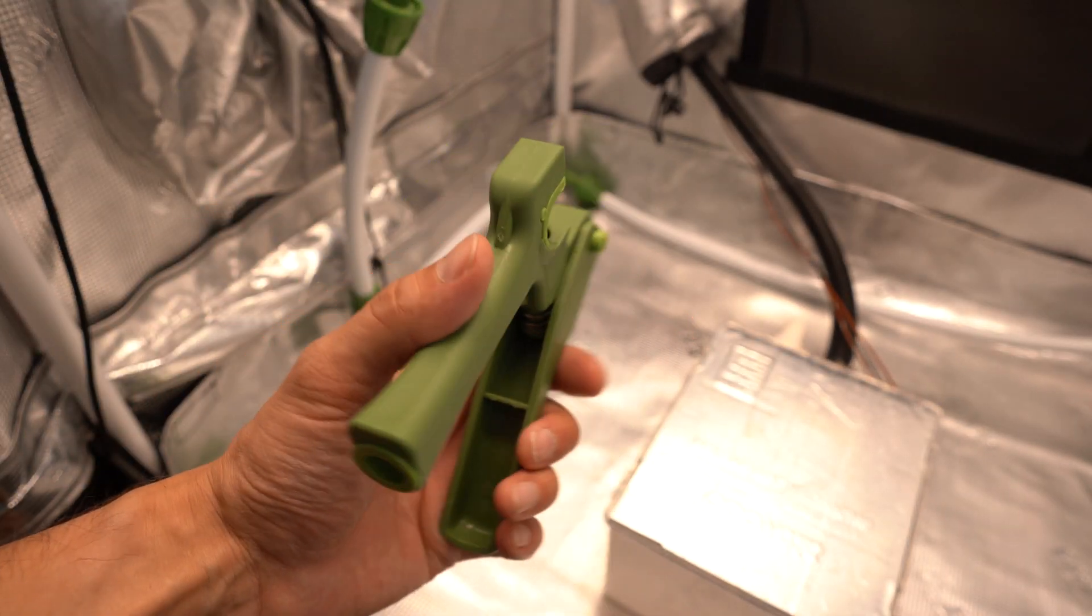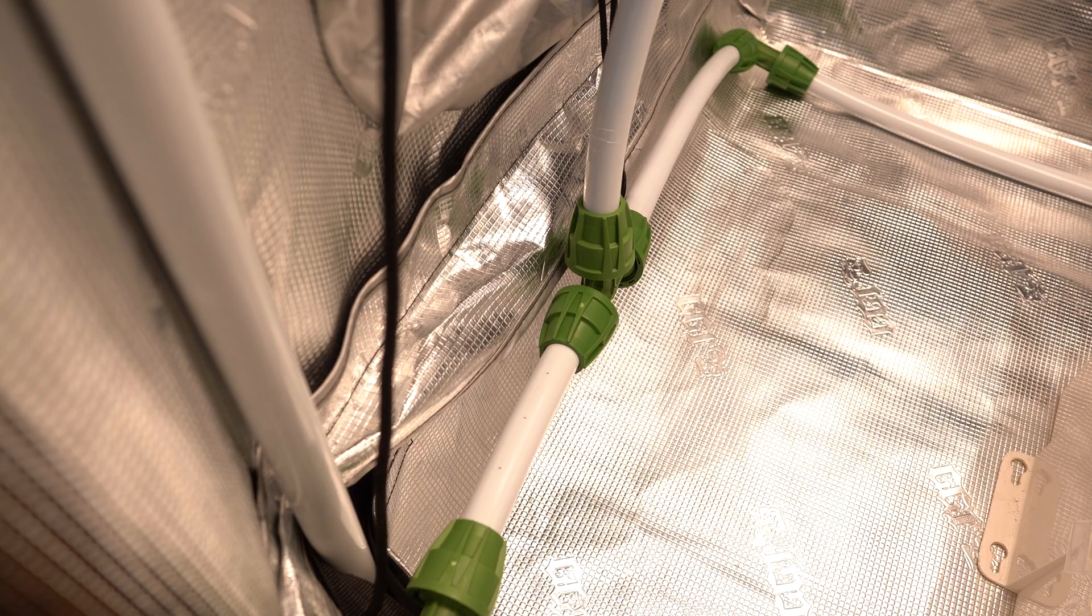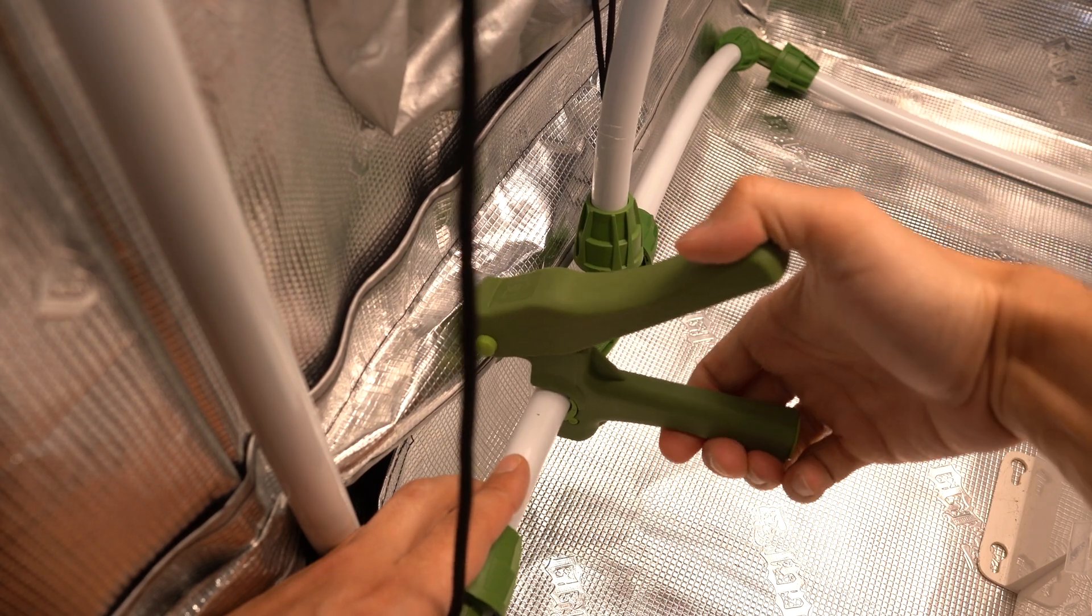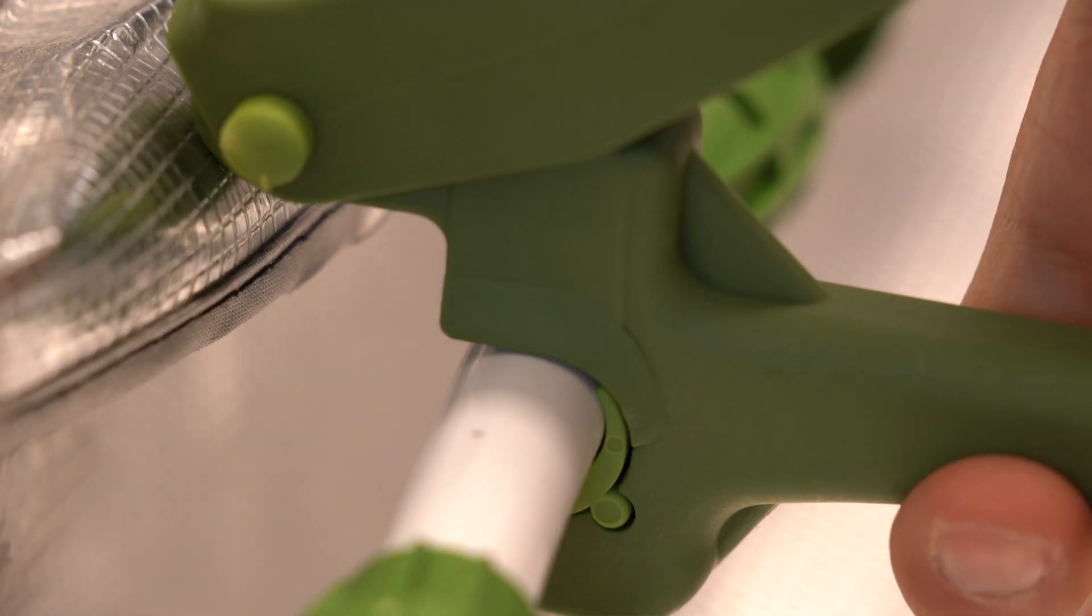To connect the drippers to the main line, I'll be using this puncher tool to do so. The emitters are self-tapping, but I figured I'd save my fingers the hassle. I first marked where I wanted the lines to start and then started punching the holes. I'll be installing three lines per pot for a total of 12 lines.